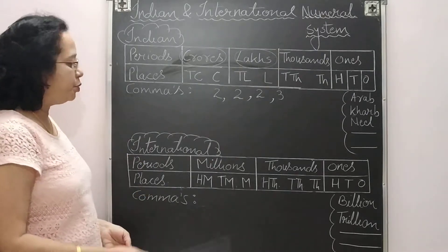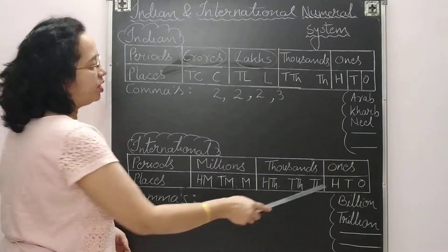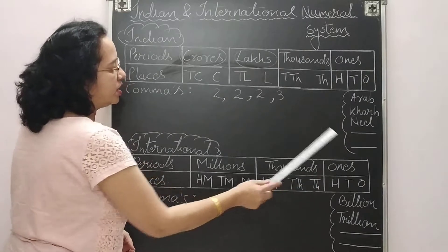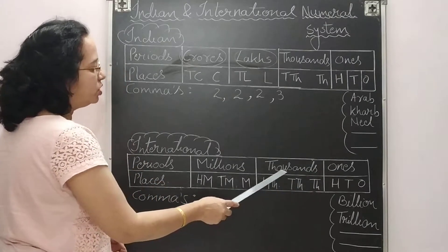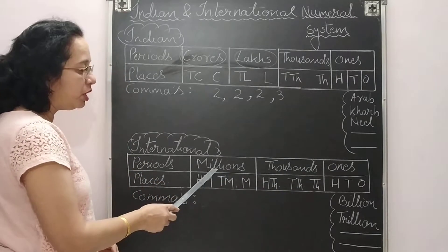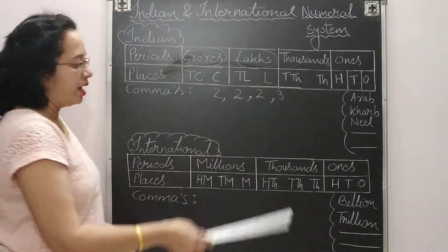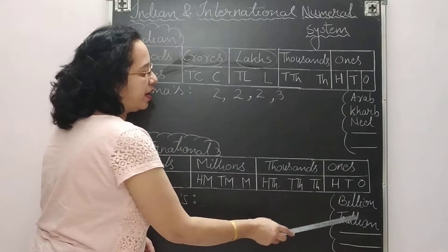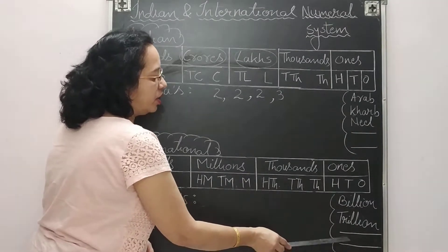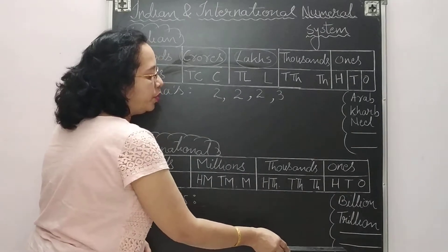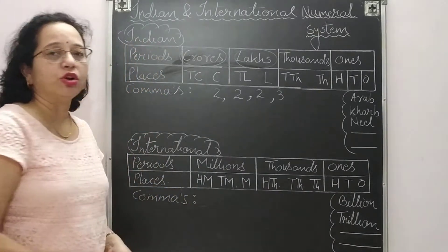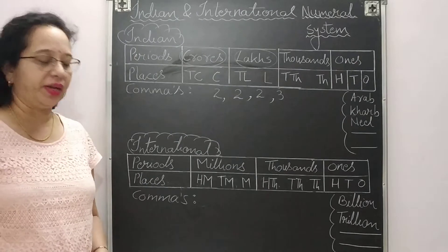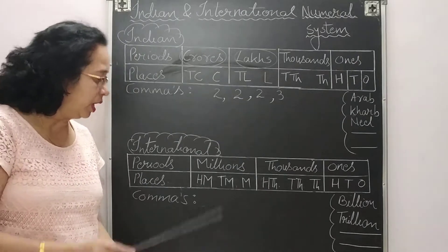Now coming to the international number system — which periods do we have here? We have ones, thousands, millions, billions, trillions, and the next two periods are your work to find out.